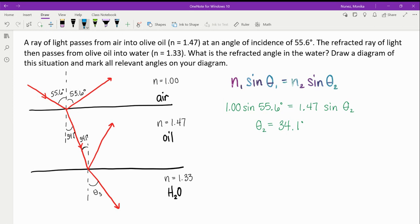Now I'm going to look at the other boundary going from oil into water. So this time that light is starting in oil. And so my first index of refraction that I'll write will be 1.47. And when the light is in that oil, it makes an angle of 34.1 degrees with the normal. And then it's moving into water. So 1.33 times the sine. And I'm going to write that theta 3 here so it's not confused with the theta 2 that we used before.